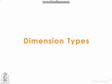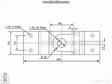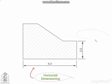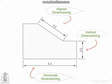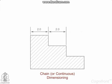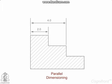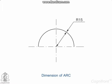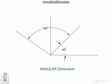Now it's time to give exact dimensions to our drawings. Dimensioning plays a very important role while drawing. There are many types of dimensioning such as horizontal dimensioning, vertical dimensioning, aligned dimensioning, chain or continuous dimensioning, parallel dimensioning, diameter dimensioning for circles, radius dimensioning for arcs, and angular dimensioning for angles.